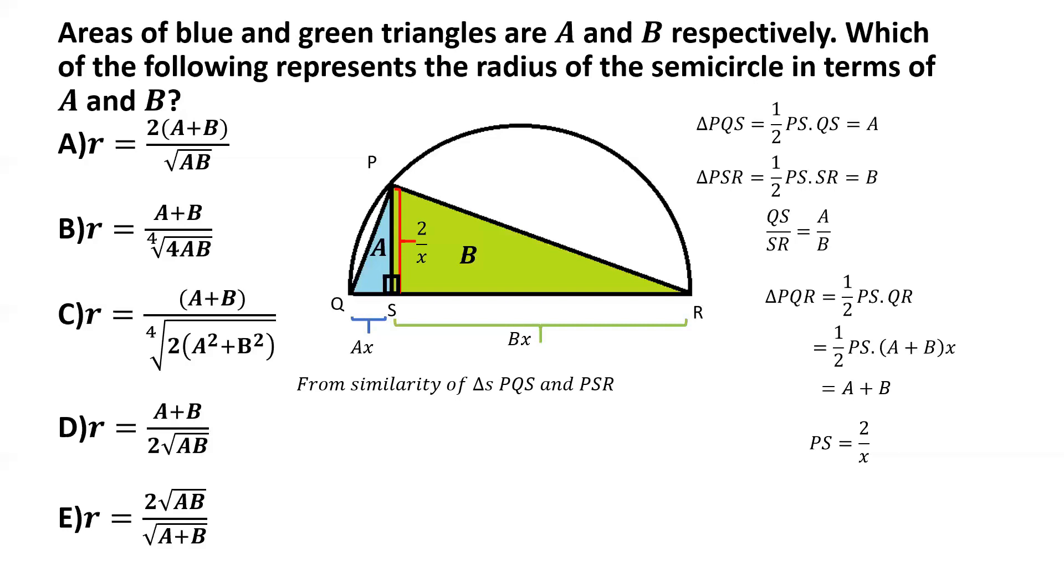But here, I'm skipping that particular proof and I'm taking the advantage of the result itself. So we know that triangles PQS and PSR would have to be similar triangles. So the ratio of the corresponding sides of the similar triangles should be equal.